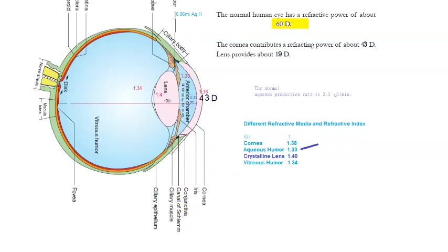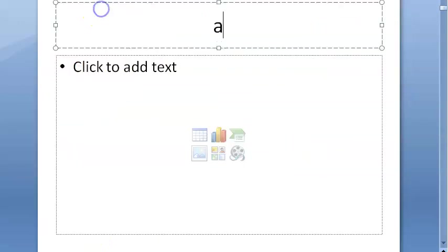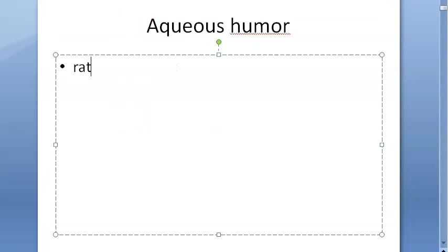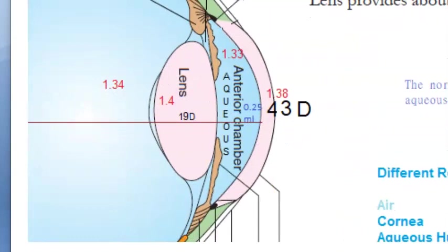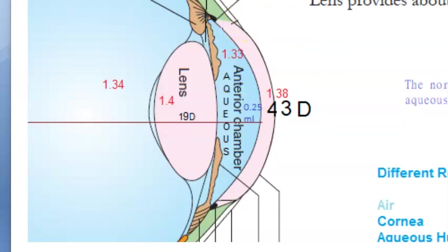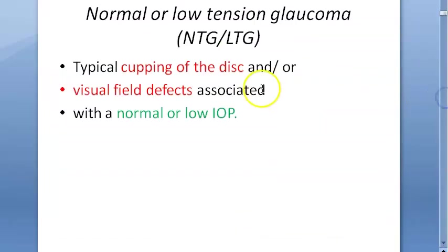In exam introductions, give details about aqueous humor. The rate of production is around 2.3 microlitres per minute. Aqueous humor is produced in the posterior chamber from the ciliary processes, comes out of the pupil, and drains into the trabecular meshwork mainly.